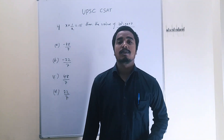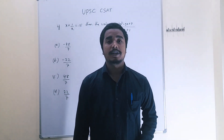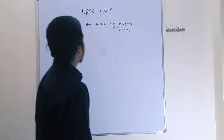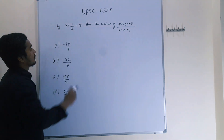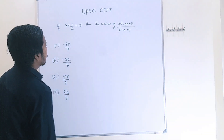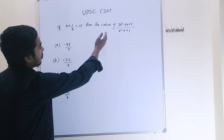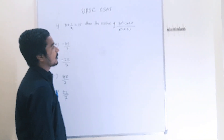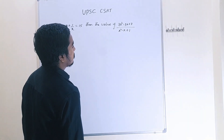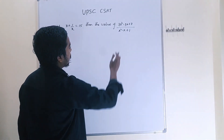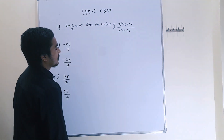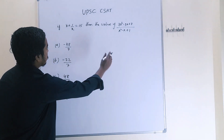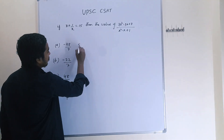Hello everyone, today we are going to solve a UPSC C-SAT problem. The given question is: if x + 1/x is equal to 15, then what is the value of (7x² - 9x + 7) / (x² - x + 1)?